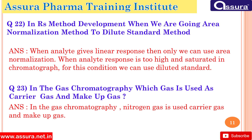When do we use area normalization versus dilute standard methods? We use area normalization when the analyte gives a linear response. When the analyte response is too high and saturated in the chromatograph, we use the dilute standard method. In gas chromatography, which gas is used as a carrier gas and makeup gas?